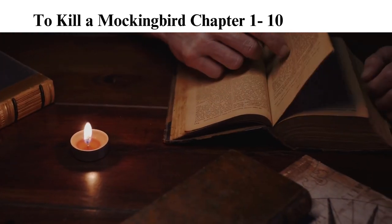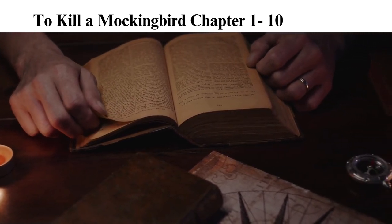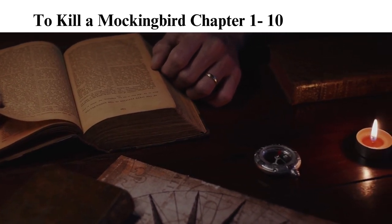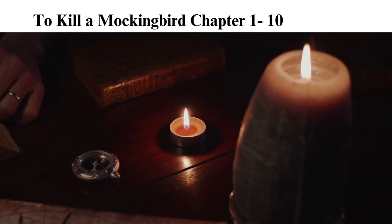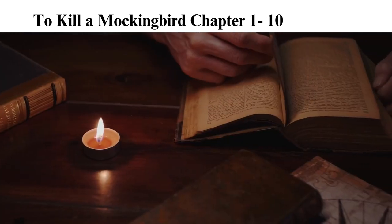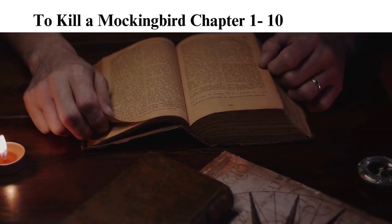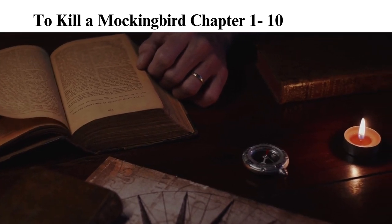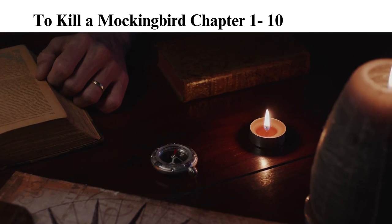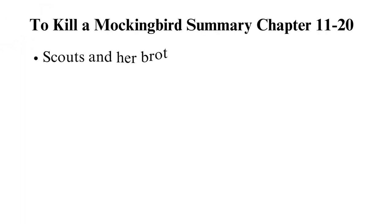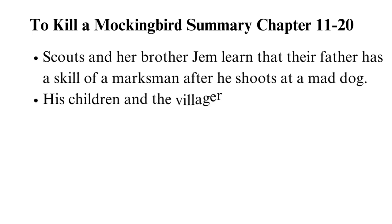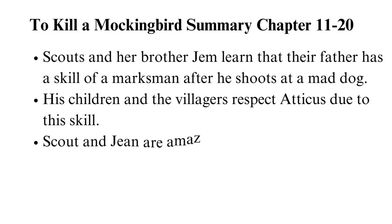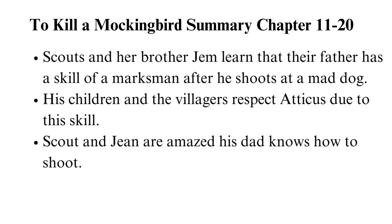The kids keep getting more presents at the knothole tree, and now they have no qualms about taking them. Atticus, a lawyer, decides to defend Tom Robinson, accused of raping a white woman. His decision lands his kids into trouble even at school, as everyone abuses them, but Atticus cautions Scout to avoid fights. To Kill a Mockingbird Summary Chapter 11 to 20: Scout and her brother Jem learn that their father has the skill of a marksman after he shoots a mad dog. His children and the villagers respect Atticus due to this skill. Scout and Jem are amazed their dad knows how to shoot. Tom Robinson's case creates tension in Maycomb Village, which affects the Atticus family.